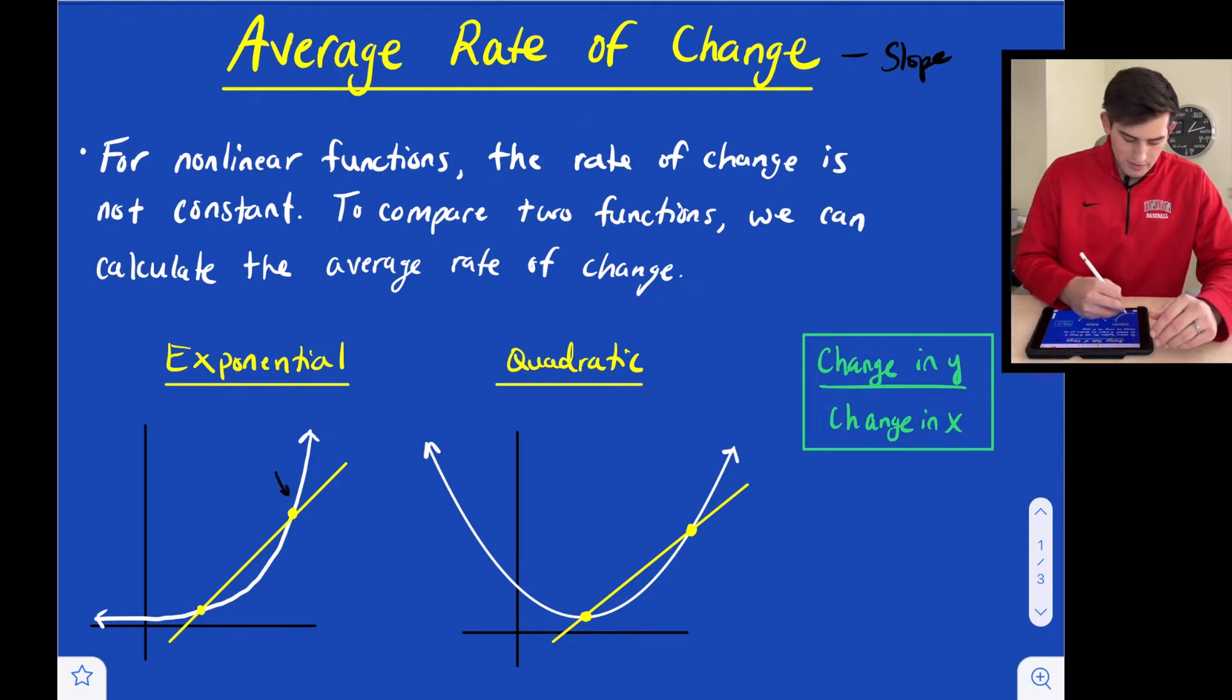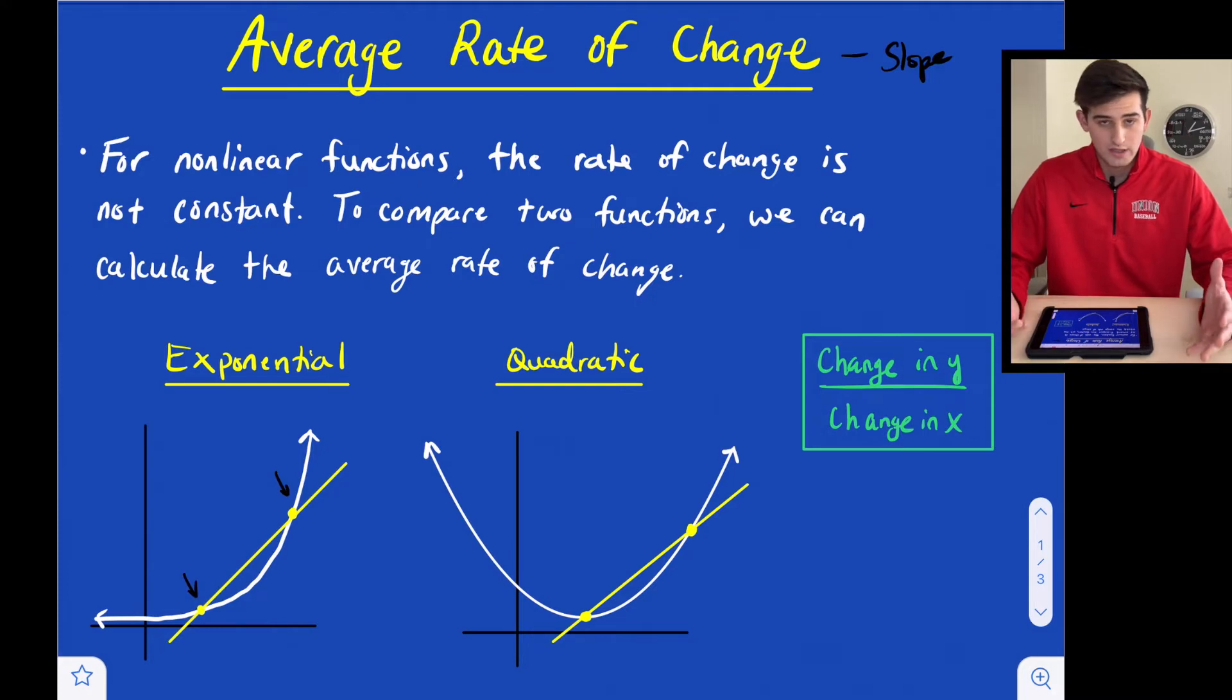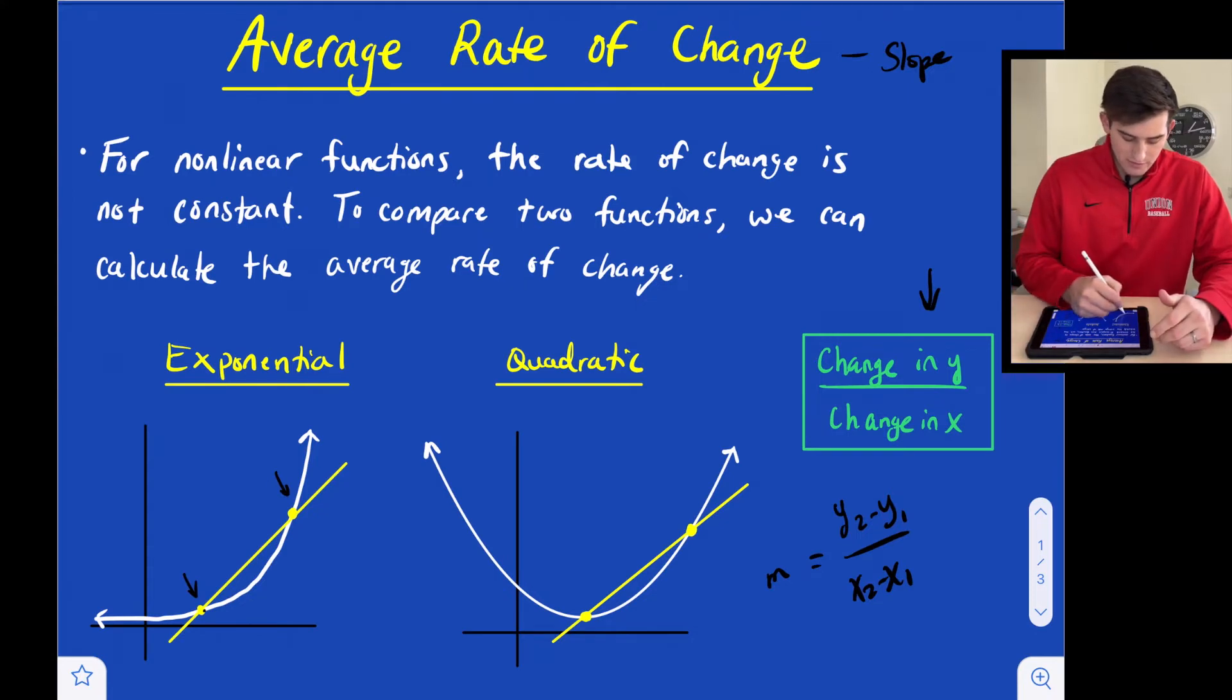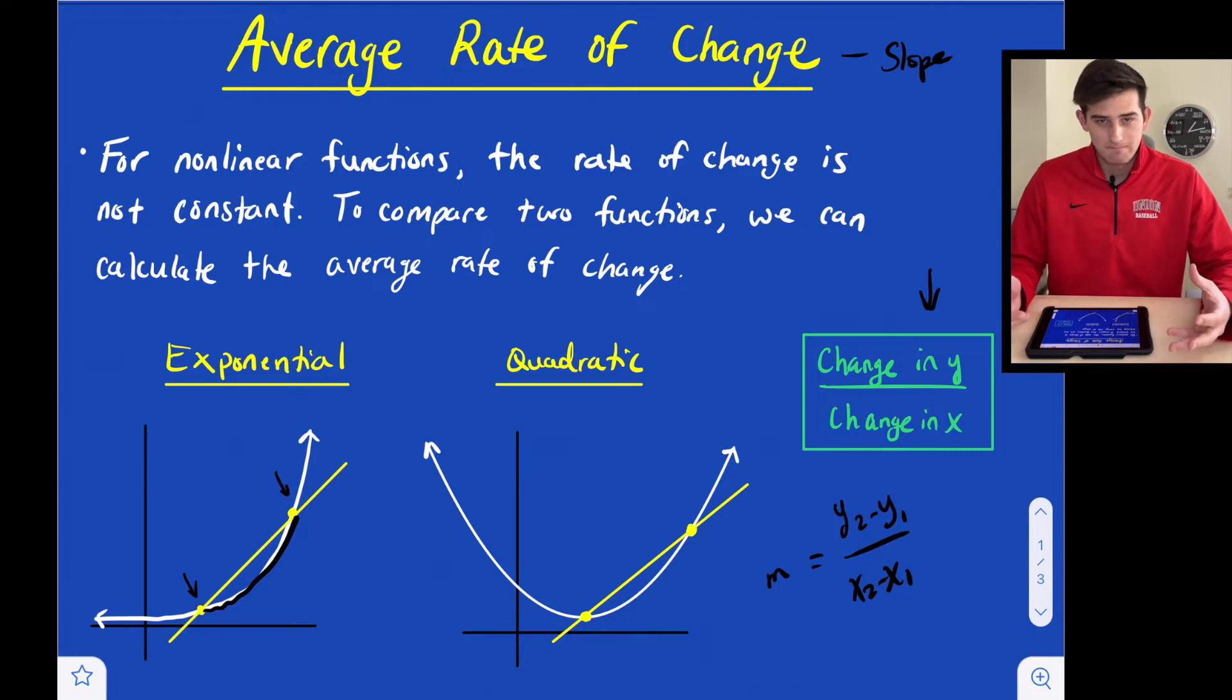We have this point right here and this point right there. So we'll know the x value and the y value of that coordinate. Then we just do the change in y over the change in x, or we could do y sub 2 minus y sub 1 over x sub 2 minus x sub 1. That's just our slope formula. So essentially, the process is just calculating the slope, but it's the average rate of change.